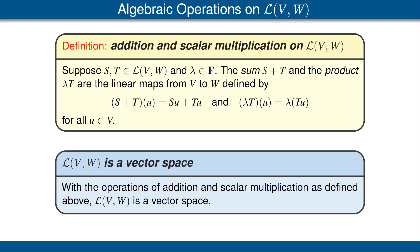It should not be a surprise to you that with these definitions of addition and scalar multiplication, L(V,W) becomes a vector space. Thus, we have a whole new class of examples of vector spaces.